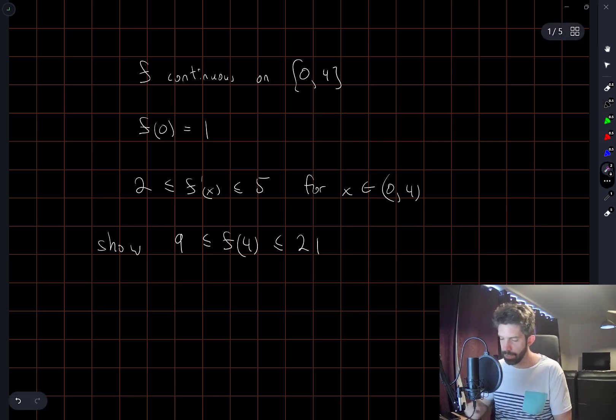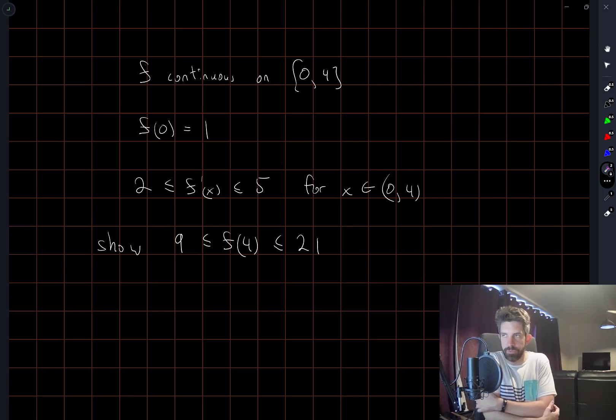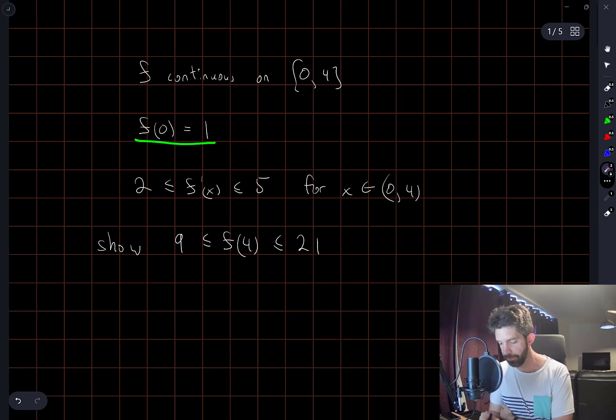Okay, so the idea here, if you want to picture things geometrically, we have a starting point for the value of our function. At the left endpoint of this interval, f(0) equals 1.